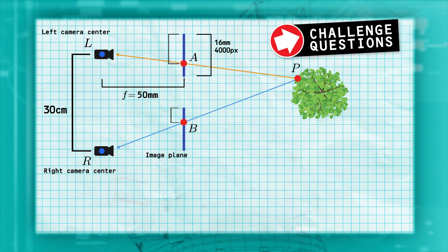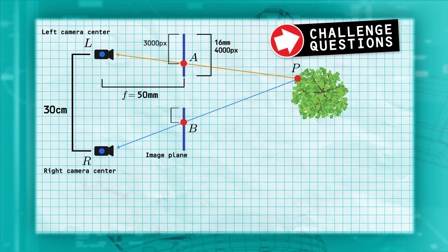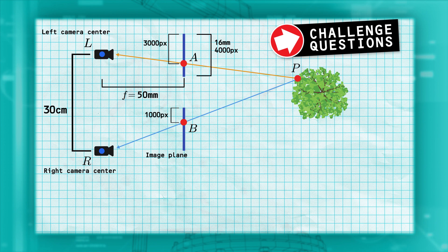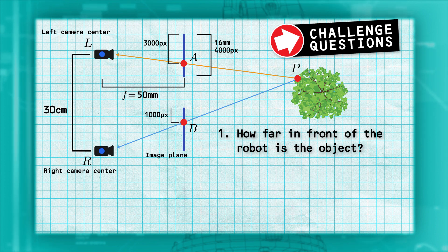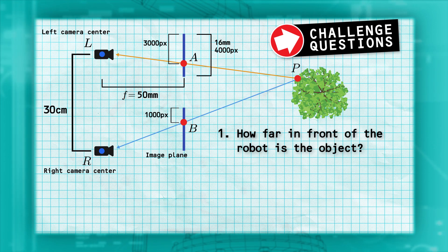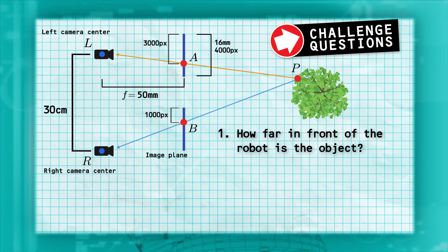Question one is, if a feature on an object is located on an X coordinate of 3,000 on the left camera and on an X coordinate of 1,000 on the right camera, how far in front of the robot is the object? Again, that is 3,000 on the left camera and 1,000 on the right camera. Where is the object?